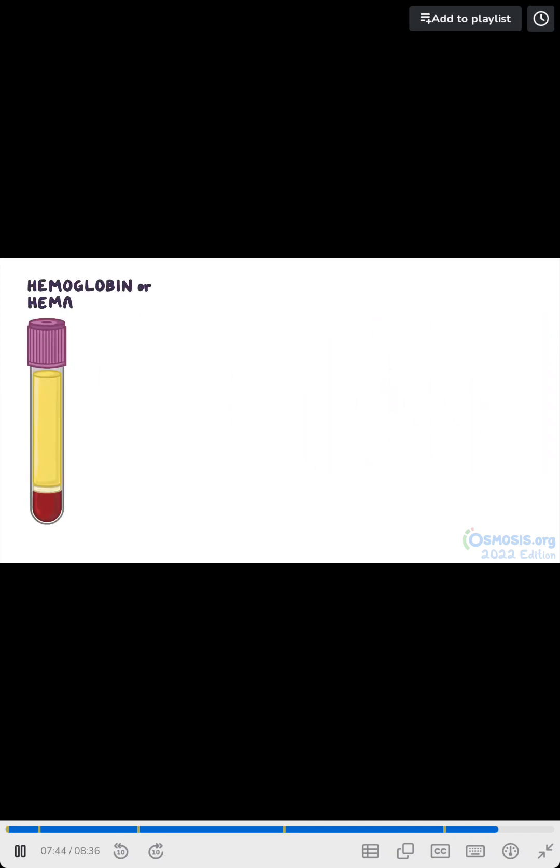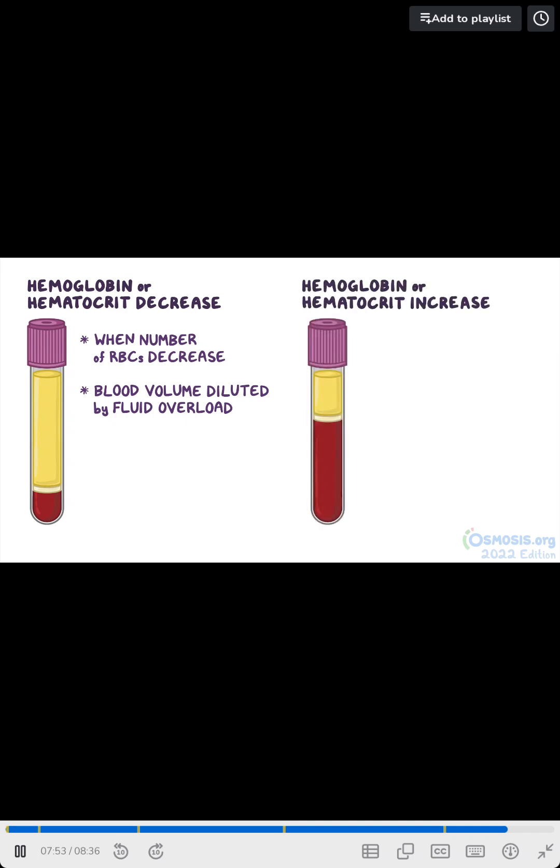Hemoglobin and hematocrit values can decrease when the number of RBCs decrease or when blood volume is diluted by fluid overload. Hemoglobin and hematocrit values can increase when the number of RBCs increase, like with polycythemia, or if the blood becomes concentrated, which can happen with dehydration.